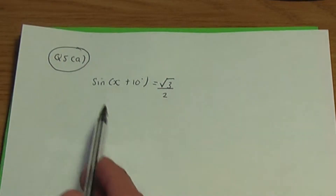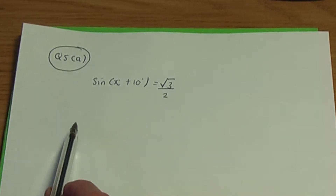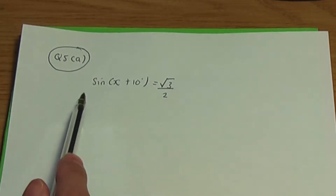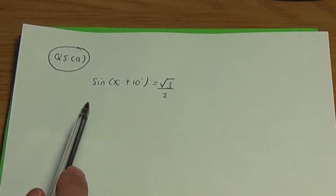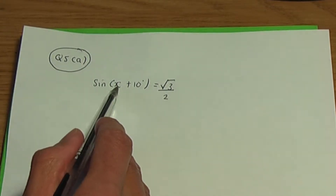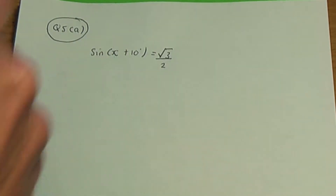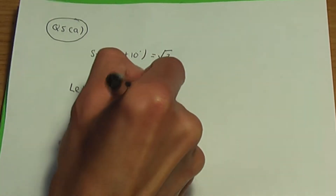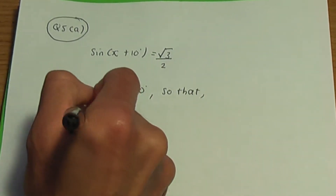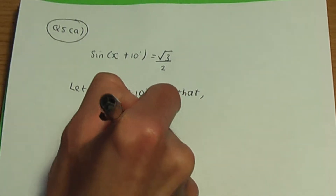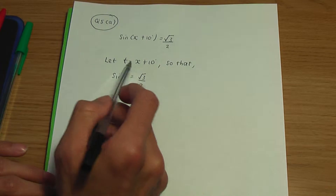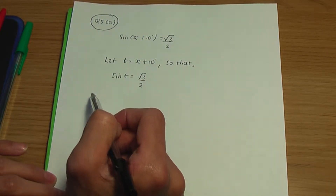So here's the equation given: sin(x + 10°) = √3/2. I did a video on solving trigonometric equations such as these, and I'll provide a link to that video in the description below. Let me show you how to solve this equation. If your angle is not x only, I would recommend using a substitution. So I let t = x + 10°, and using this substitution, I can rewrite the given equation as sin(t) = √3/2. The idea is to find all the t angles first, and then go back to the substitution to find all the x angles.